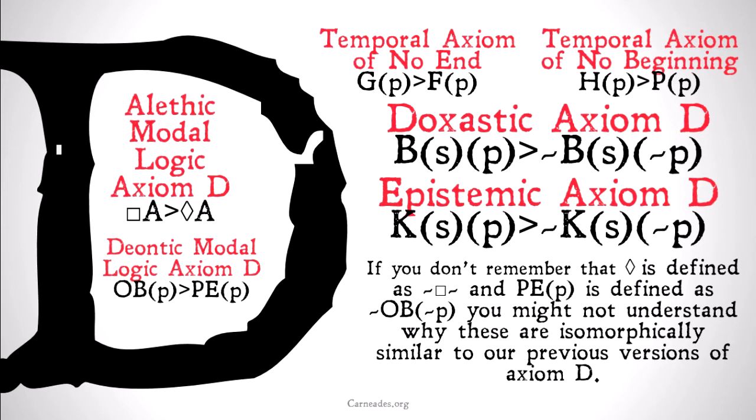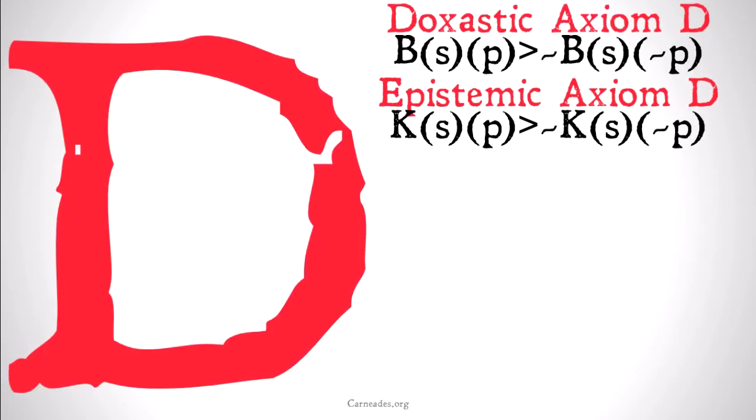The alethic modal logic axiom D could just as easily be written as: it's necessary that A implies it's not the case that it's necessary that it's not the case that A. Just as the deontic modal logic axiom D could be written as: it's obligatory that P implies that it's not the case it's obligatory that not P. Hopefully that's clear and these are the isomorphically similar pair to the other axiom D's.